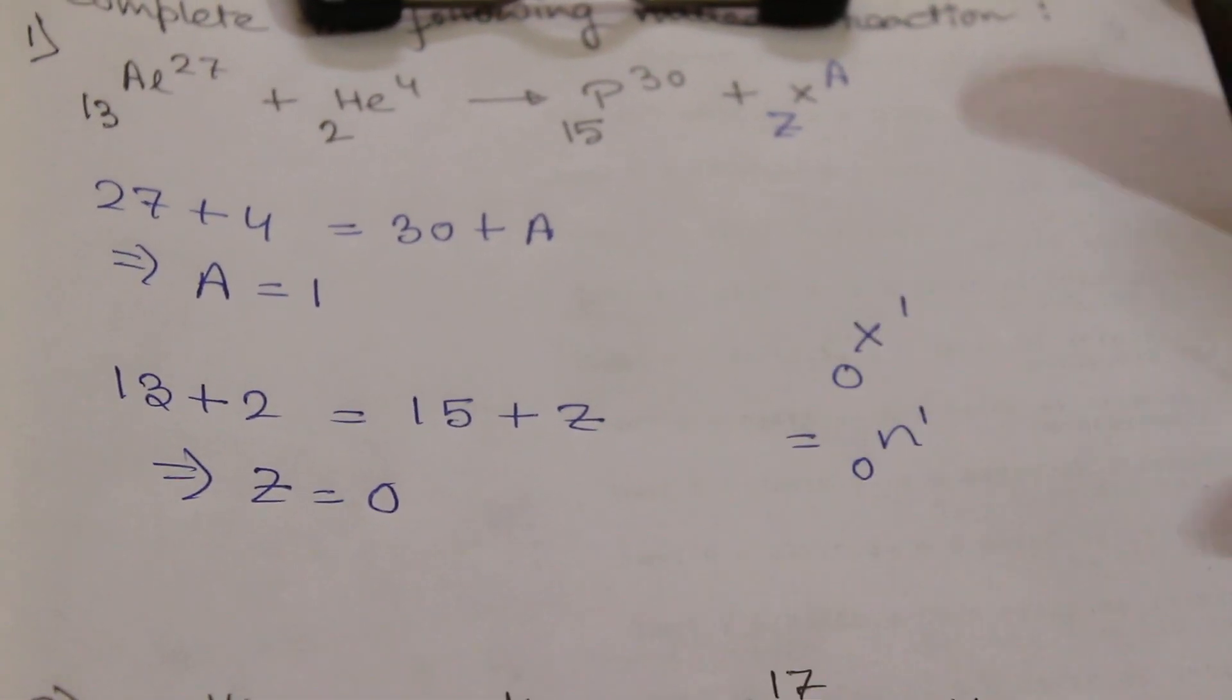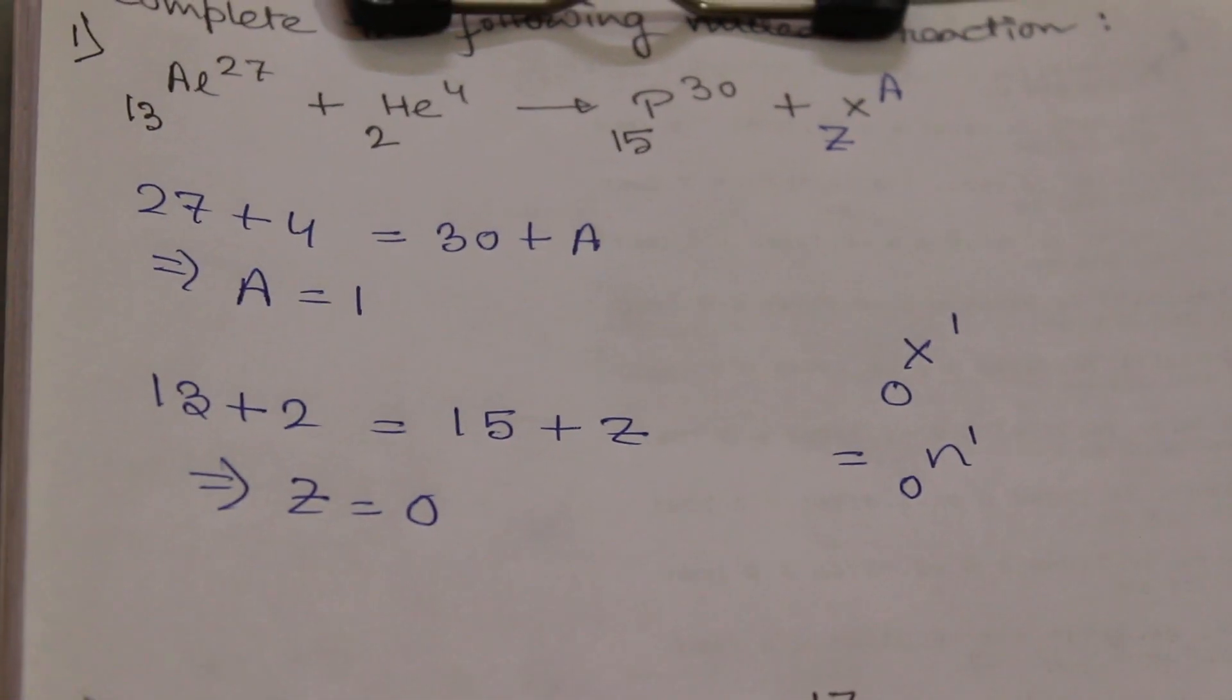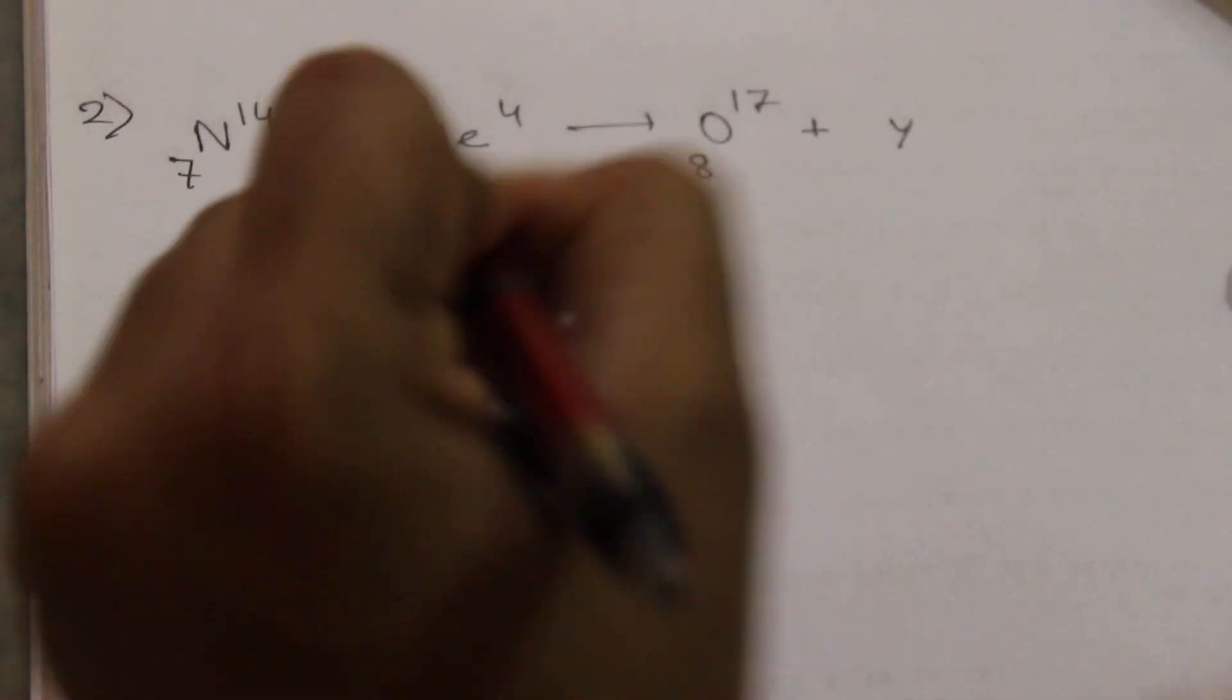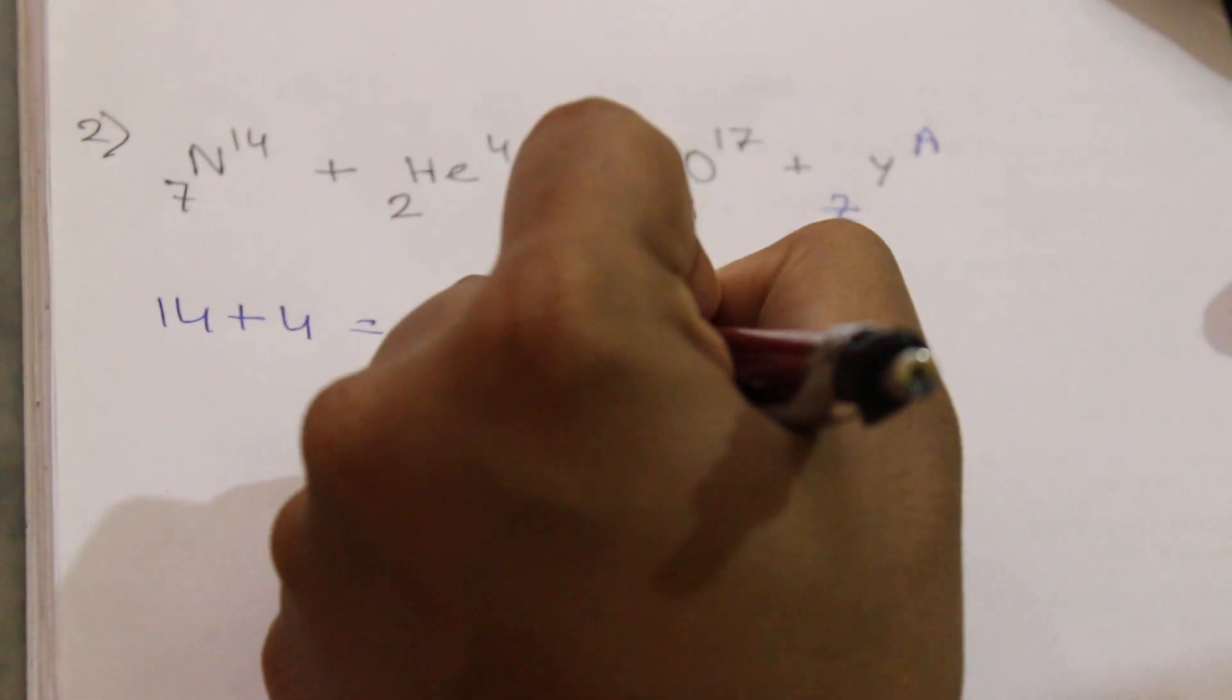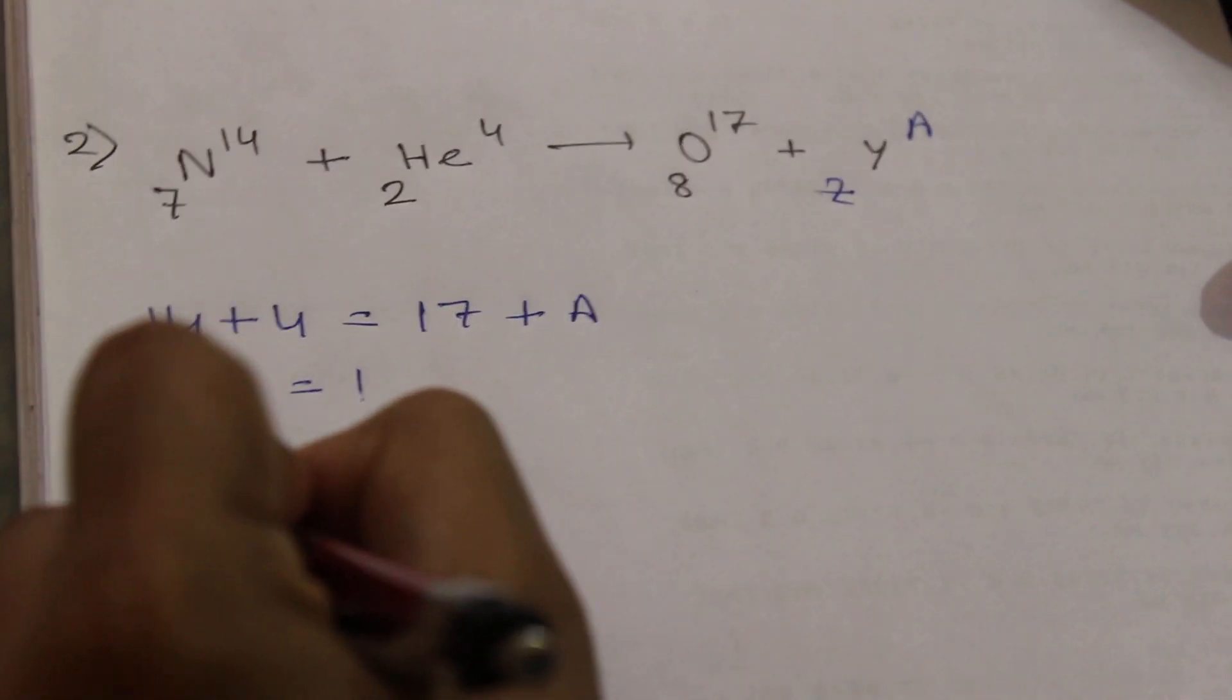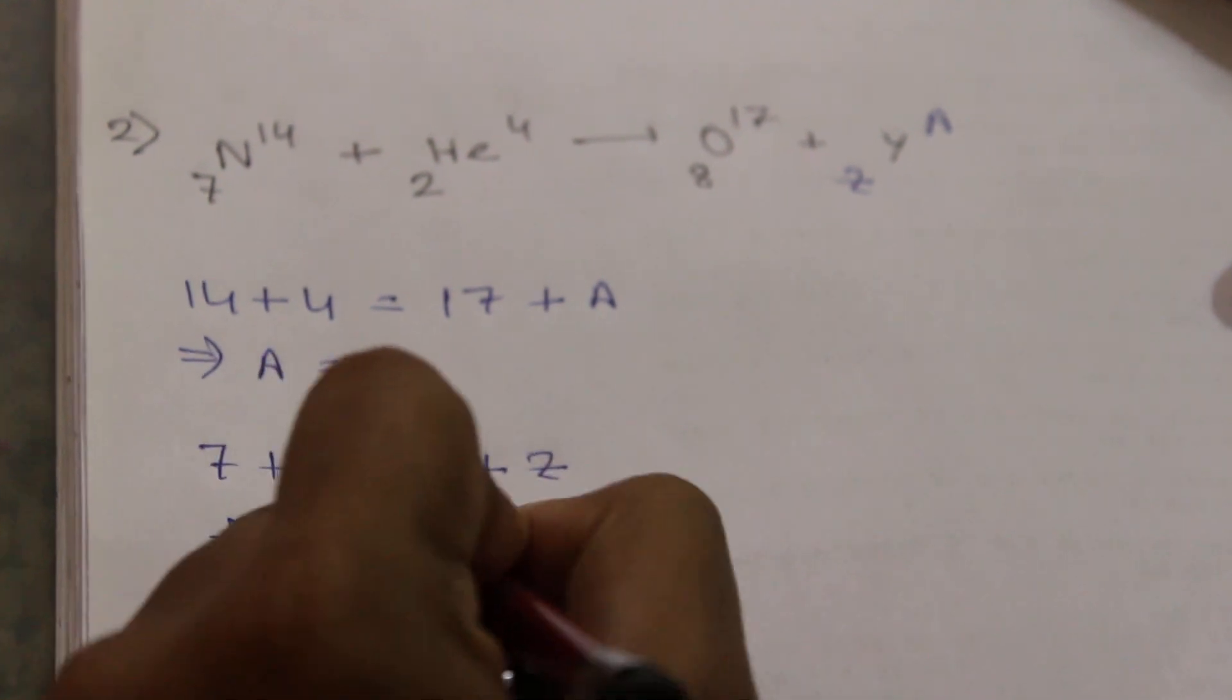Moving on to our next example, we have to identify the element Y. So again we will do the same thing: 14 plus 4 equal to 17 plus A, so from here we will get A equal to 1. And again if you balance the atomic number, then 7 plus 2 equal to 8 plus Z, so from here we will get Z equal to 1.